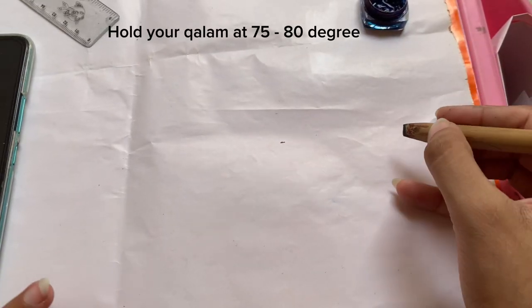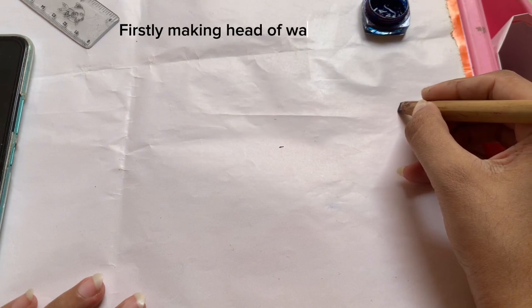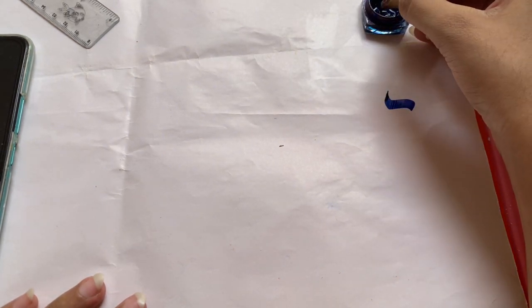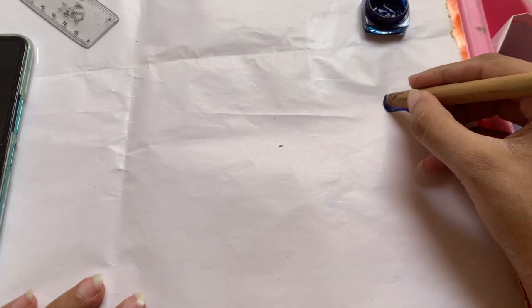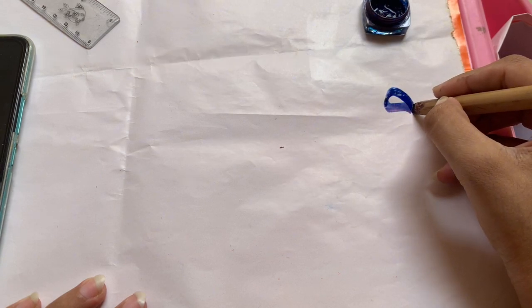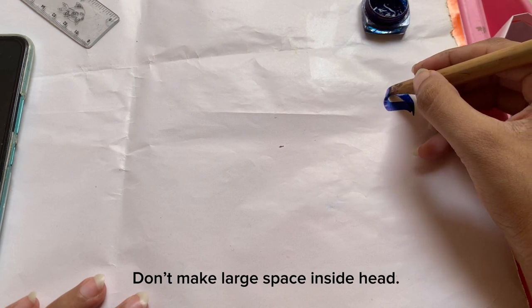Hold your qalam at 75 to 80 degrees. First, make the head of waw. Imagine the head of waw in a 2x2 square box. Don't make large space inside the head.